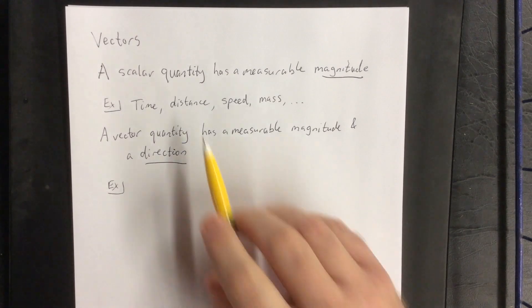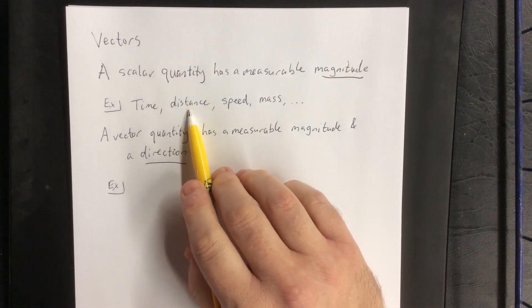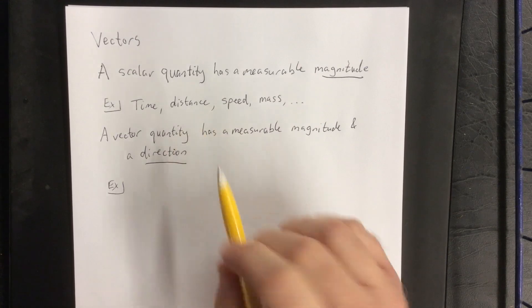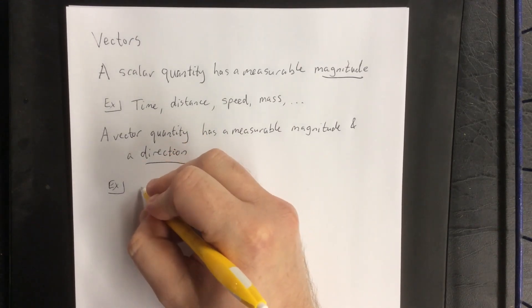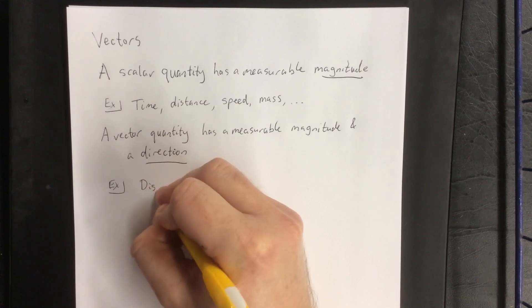For example, when I said that I walked a total of 2.5 kilometers, I never specified in what direction I went. As soon as you give a distance a direction, you now have what's referred to as a displacement.